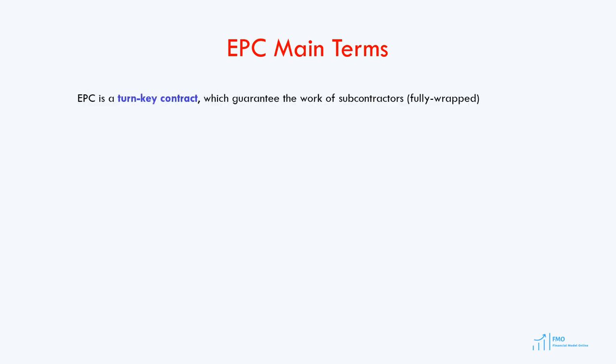The EPC contract is a turnkey contract, and the EPC firm guarantees the work of subcontractors. It is a fully wrapped contract where the EPC firm handles every aspect of engineering, procurement, and construction. The turnkey contract means the EPC firm will deliver a project ready for operation once construction is complete — the sponsor only has to turn the key to start operations. The cost of the project in the EPC contract is typically fixed, so the sponsor, the EPC firm, and most importantly the lender know in advance what the total cost will be. Under the EPC contract, the EPC firm is responsible for construction cost overruns; therefore, it is called a fixed price contract.